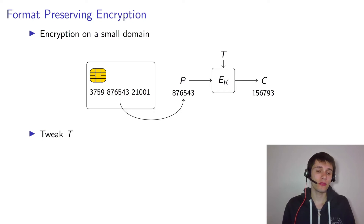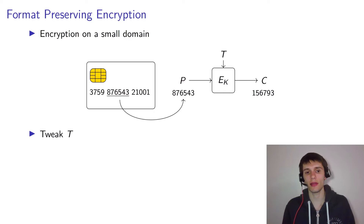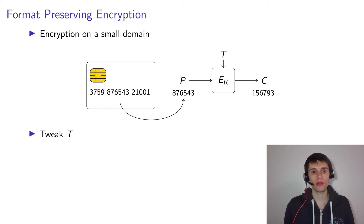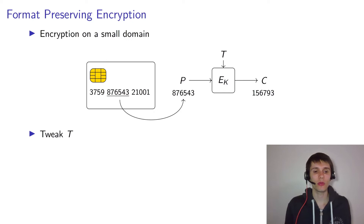The reason for using a format-preserving encryption scheme in such cases is often that there's a legacy system that doesn't allow handling larger than six-digit integers. Of course, the problem with this is that there aren't so many six-digit integers, so you're essentially doing encryption on a very small domain, and that would normally lead to simple codebook attacks.